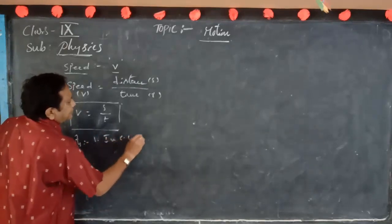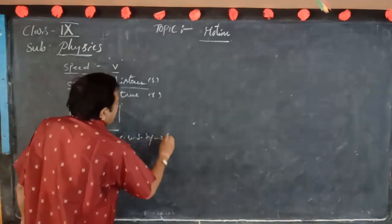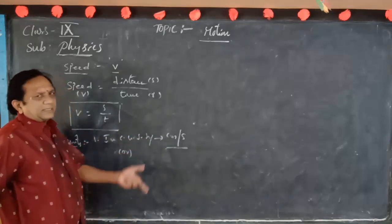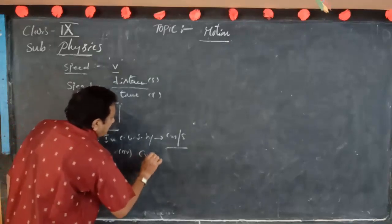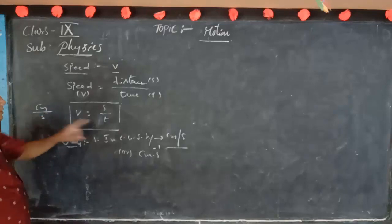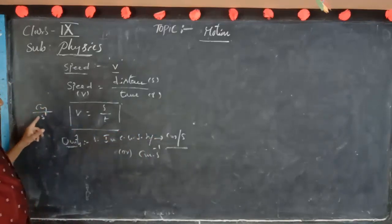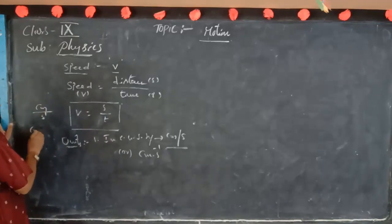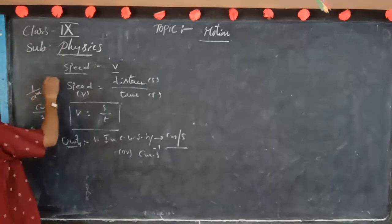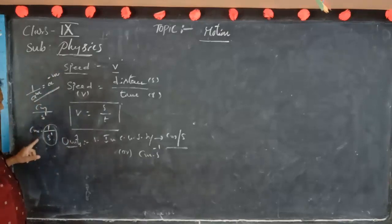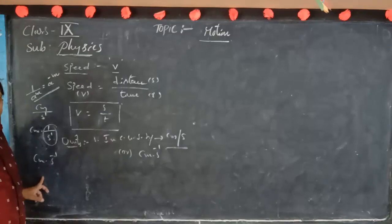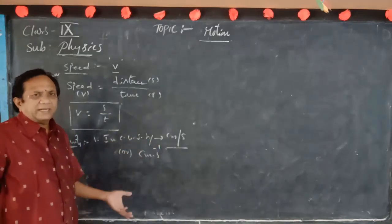In the CGS system, distance is measured in centimetres and time is measured in seconds. So the unit is centimetres per second. This can also be written as centimetre second to the power minus 1, because 1 by a to the power of n equals a to the power minus n. Both notations read as centimetres per second.